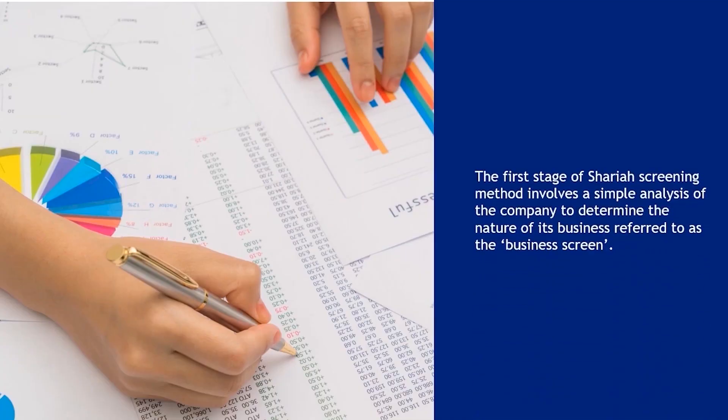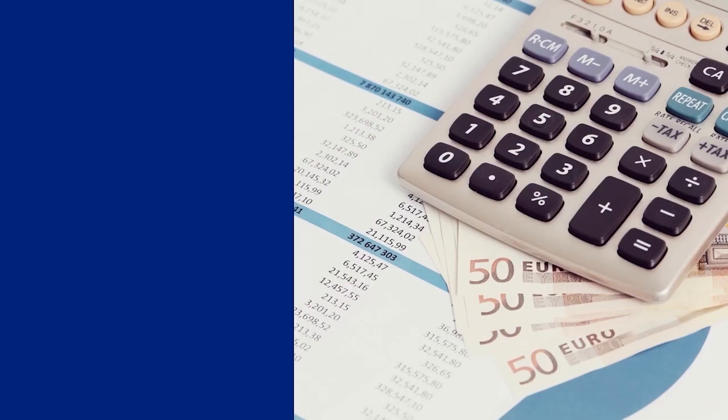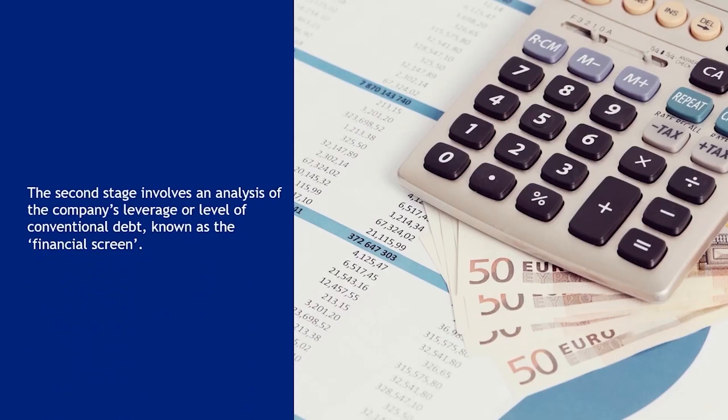The first stage of Shari'ah screening method involves a simple analysis of the company to determine the nature of its business, referred to as the business screen. The second stage involves an analysis of the company's leverage or level of conventional debt, known as the financial screen.